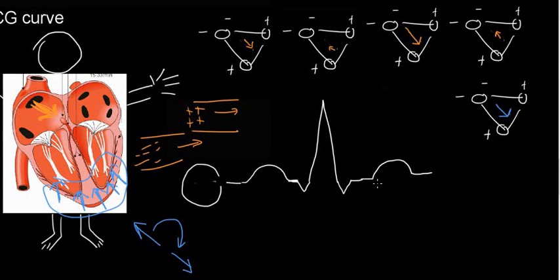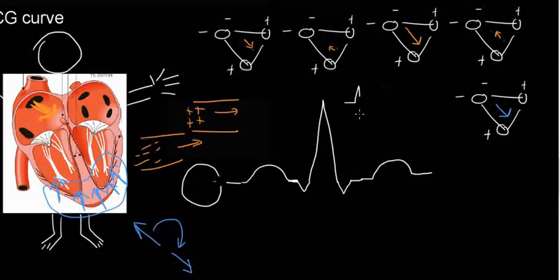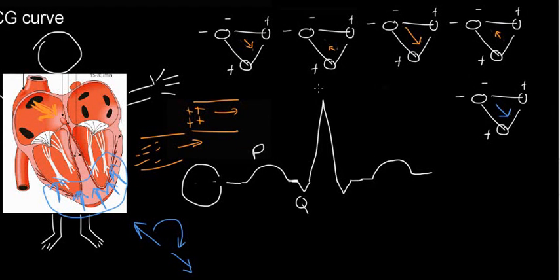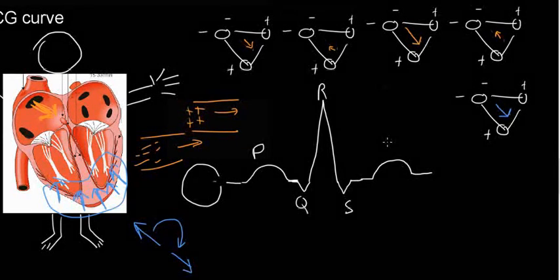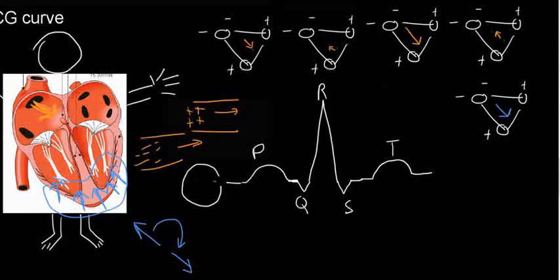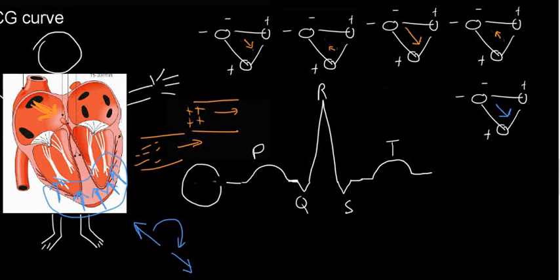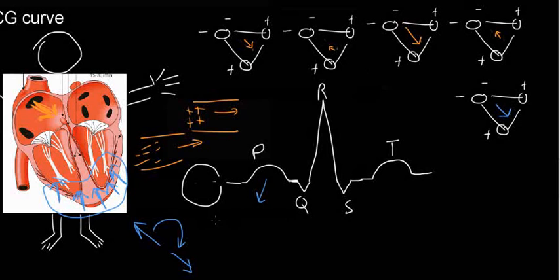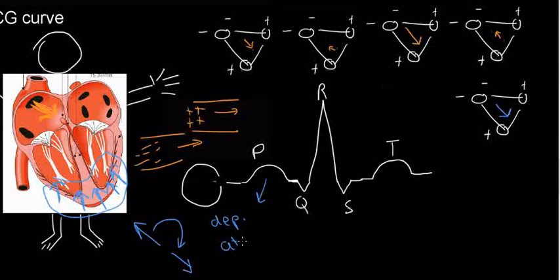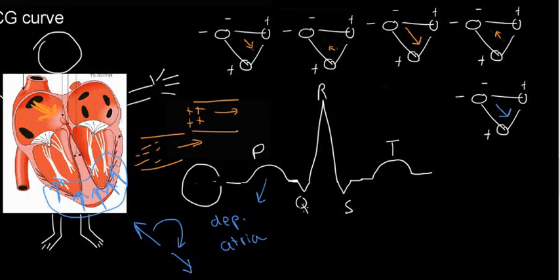This is the P, Q, R, S, and T. To understand what these mean: P is the depolarization of the atria — atria being plural for atrium.